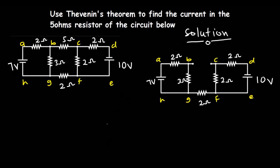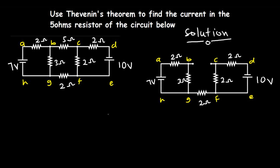In this video, we are going to solve this question on the screen. We should use Thevenin's theorem to find the current in the 5-ohm resistor of the circuit. To do this, we will first calculate Thevenin's voltage and then Thevenin's resistance, draw Thevenin's equivalent circuit, and use that circuit to find the value of the current in the 5-ohm resistor.